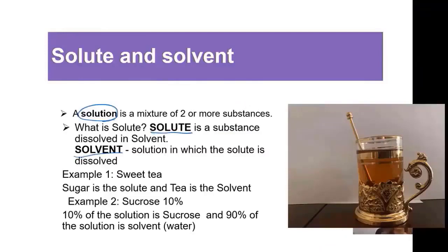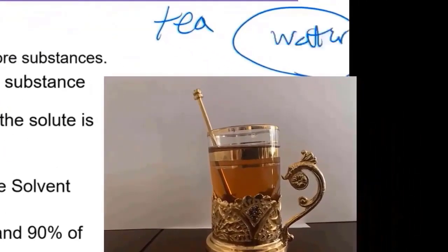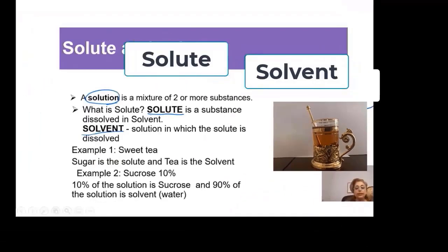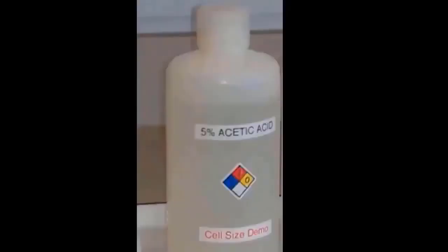Solutes are substances dissolved in the solvent. The solution in which the solute is dissolved is called the solvent. For example, when you make tea, the water is your solvent and the tea is your solute — together they form the solution. When you have a 10% sucrose solution, that means 10% of the solution is solute (sucrose) and 90% is solvent. Whenever you work with a solution that doesn't indicate the name of the solvent, you should assume the solvent is water.